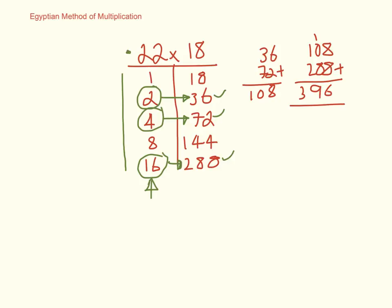We know that the standard algorithm works, so we could use that to do a quick check. So 22 times 18: 10 times 2 gives me 20, 10 times 20 gives me 200, 8 times 2 gives me 16, 8 times 20 gives me 160, and that 10 is 170, which gives me 396.